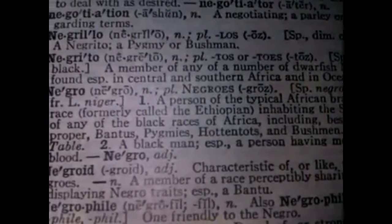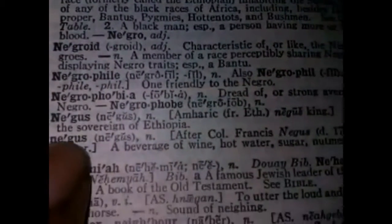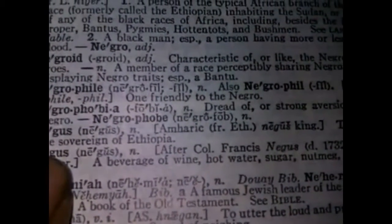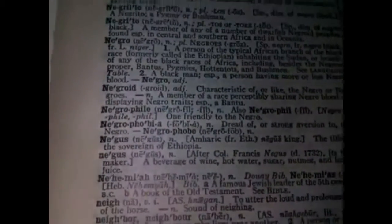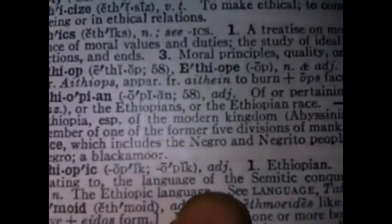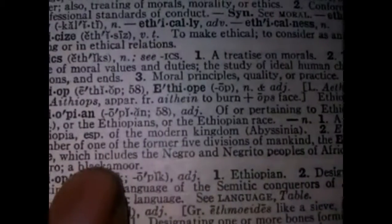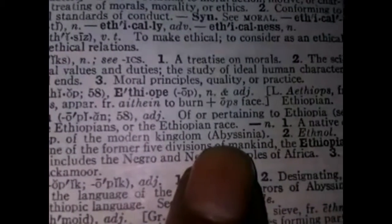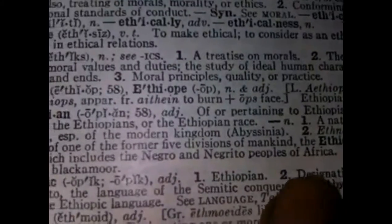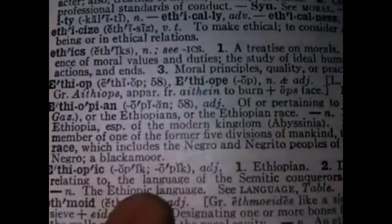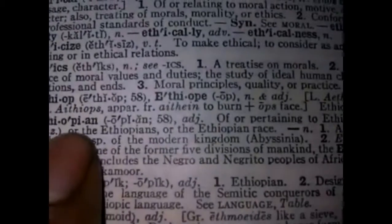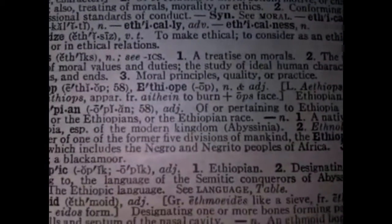Why did they stop calling them Ethiopian? Because of the Negus — because of Ademawi Hila Selassie. Brothers and sisters, I'm going to go into this a little bit more. But once again, let's go to this area right here so you can see it for yourself: we have Negro, we have Negrito, we have Niger, we have Abyssinia, we have Africa, we have Negro, we have Blackamoor — all of this in the definition of Ethiopian.